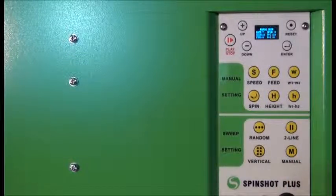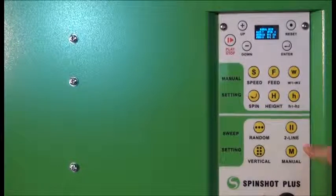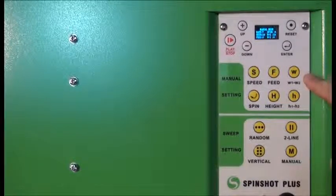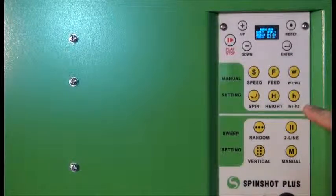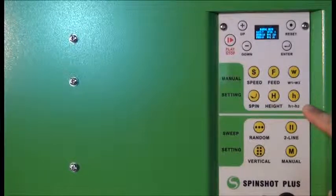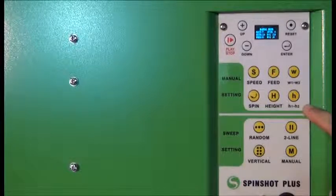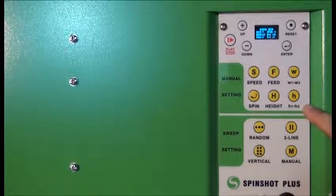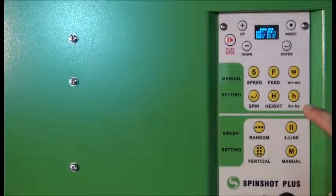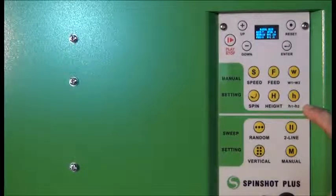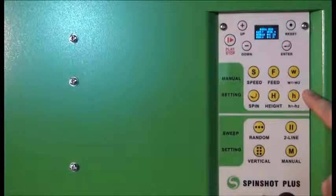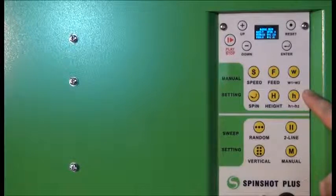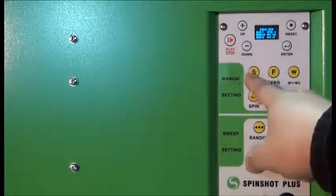Once the oscillation mode has been set, we can then go to these settings here where you can alter the speed, the feed rate, the width, the backspin or topspin, the height controlled by H1 and H2, the width by W1 and W2. And you will see the buttons at the top. We've got the up and down to increase or decrease the values.